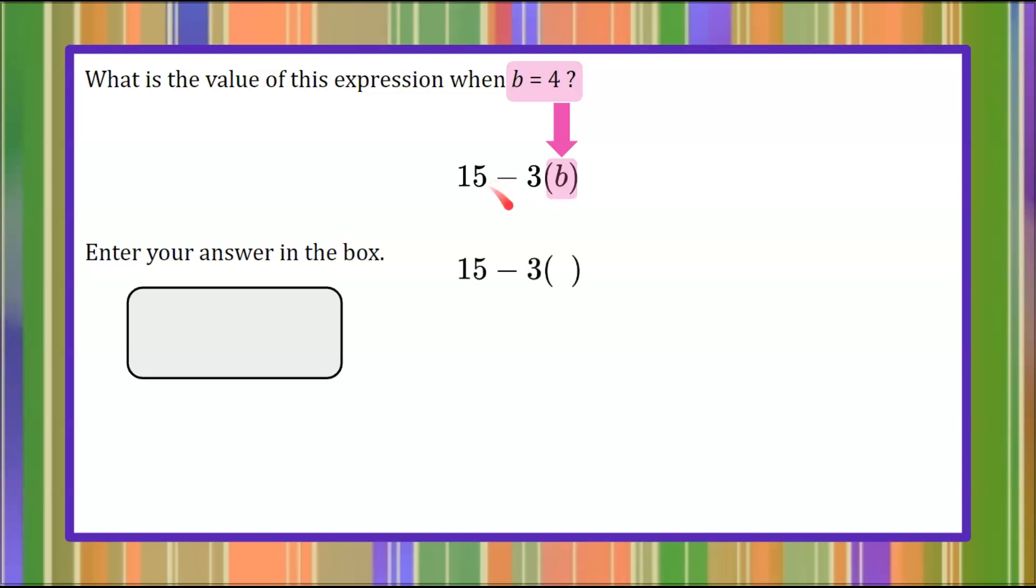So let's rewrite this to be 15 subtract 3 and instead of this b we're going to put a 4 in there. So let's go ahead and put the 4 in.